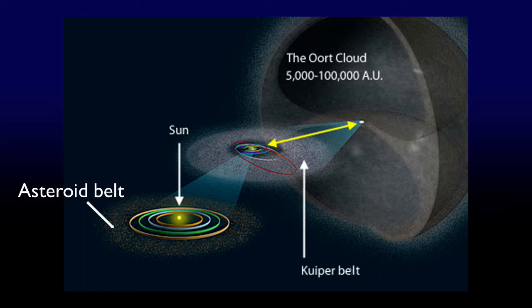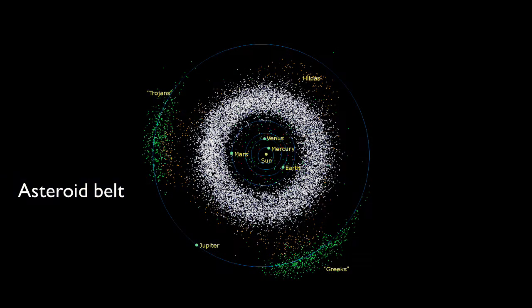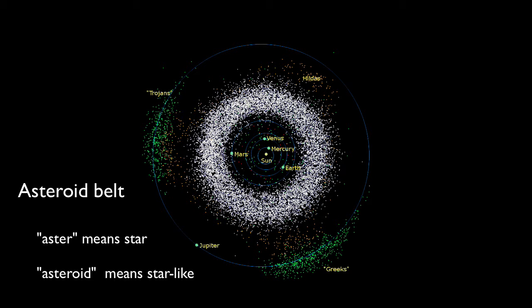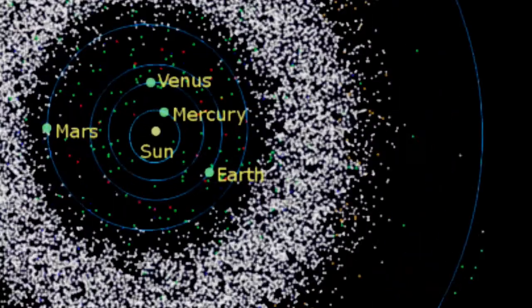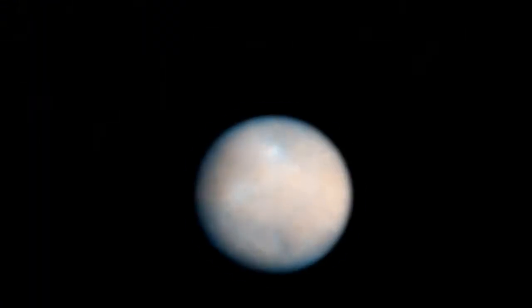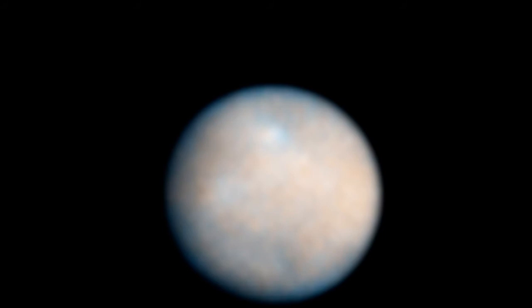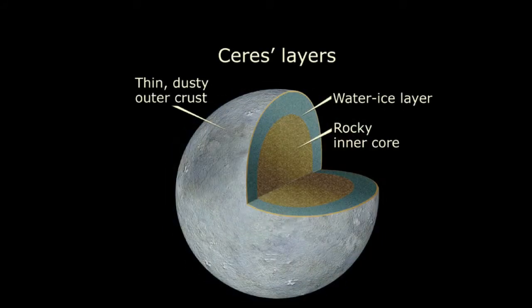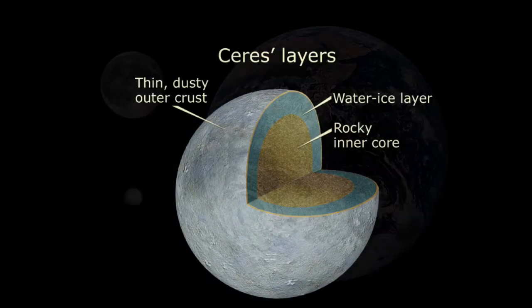First up, the asteroid belt. The term asteroid was coined by William Herschel — the same person who discovered planet Uranus back in the 1800s. Aster means star, so asteroid literally means star-like. The largest asteroid is Ceres. It's the only one to be so nearly spherical, which is why it's sometimes also called a dwarf planet.